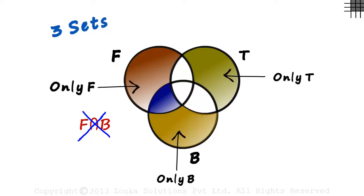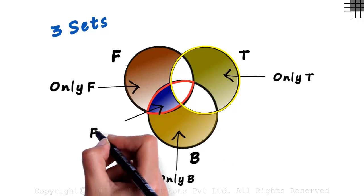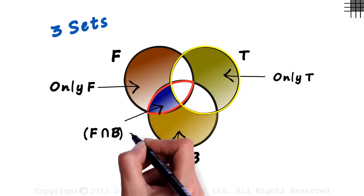This is where many go wrong in a 3-set Venn Diagram. This region is F intersection B. But in the blue region we just marked, observe that we have included nothing from set T. So this blue region is F intersection B minus T.